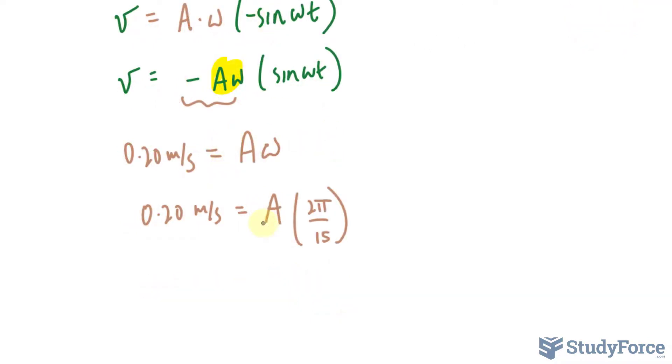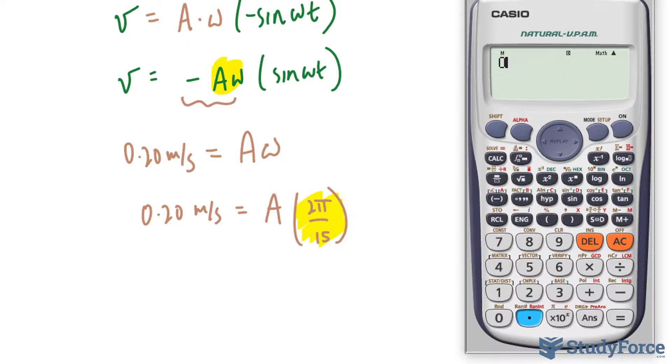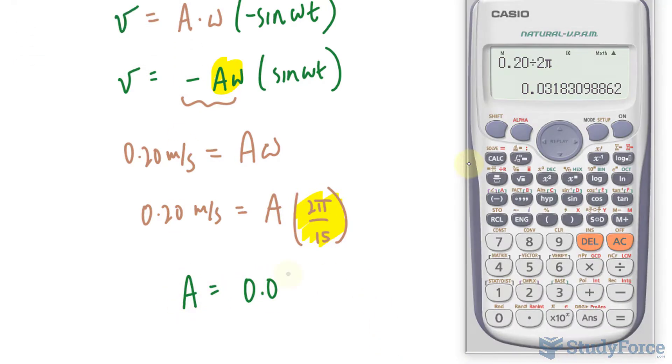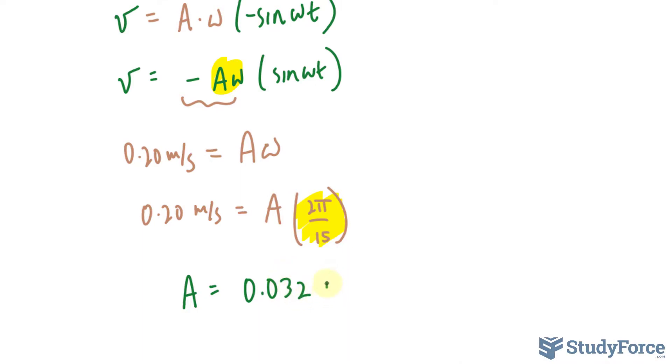Solving for A, we divide both sides by this factor: 0.20 divided by 2π. We get an amplitude of 0.0318. So A equals 0.0—we want to round to two significant figures—32 meters. This unit and that unit cancel out, leaving you with meters only. So the displacement at the maximum velocity of 0.2 will be 0.032 meters.